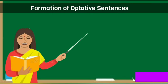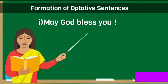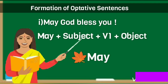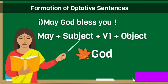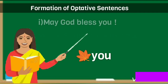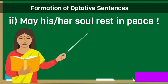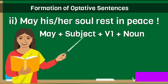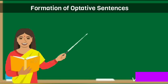Formation of optative sentences. For example: 'May God bless you.' Look at this sentence. This sentence is framed by using may at the beginning, plus subject — here, God is the subject — plus V1 verb. The verb bless is in present form, so it is called V1 verb, plus object — you is the object. One more example: 'May his soul rest in peace' or 'May her soul rest in peace.' We use this expression when someone is dead. This sentence is also written the same way: may plus subject plus V1 verb plus noun. Hope you understood the formation of optative sentences.